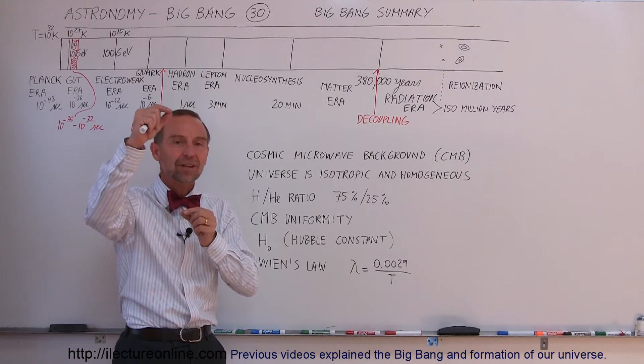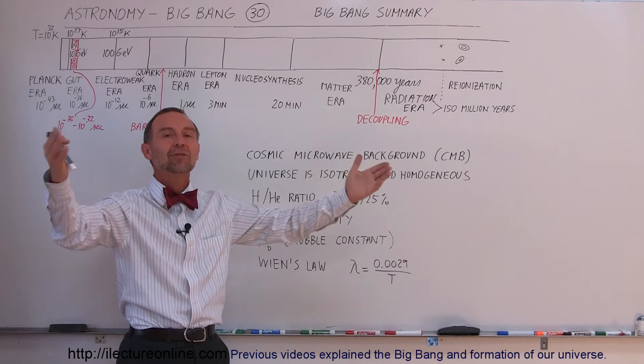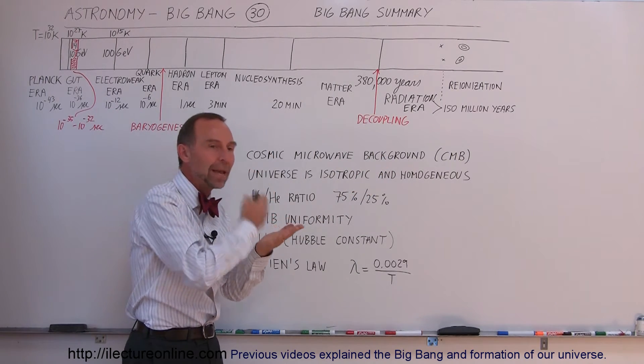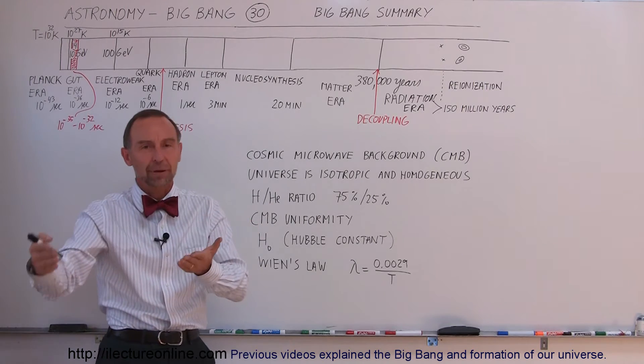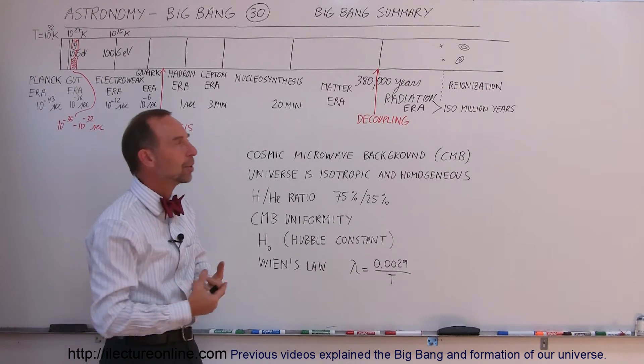Matter is no longer ionized and electrons began to join with the protons and therefore now there was plenty of space for the radiation to float freely through the Universe. And the Universe, from being a very opaque Universe, became a transparent Universe. And radiation was now set free and it was now the radiation-dominant Universe.